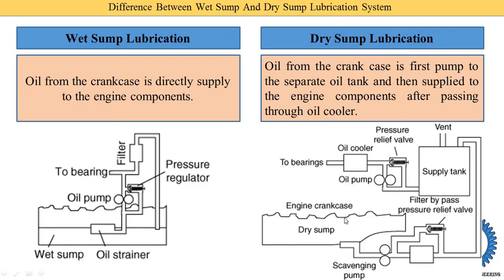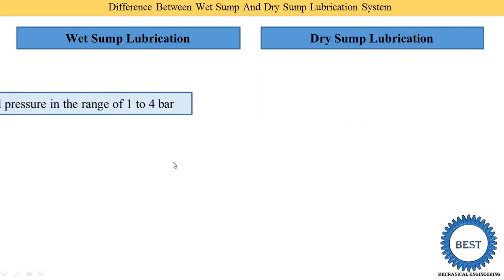In a dry sump lubrication system, oil from the crankcase is first transferred to a separate oil tank that is outside the engine. Then, after passing through the oil cooler, the oil is supplied to the various components of the engine such as the bearings.